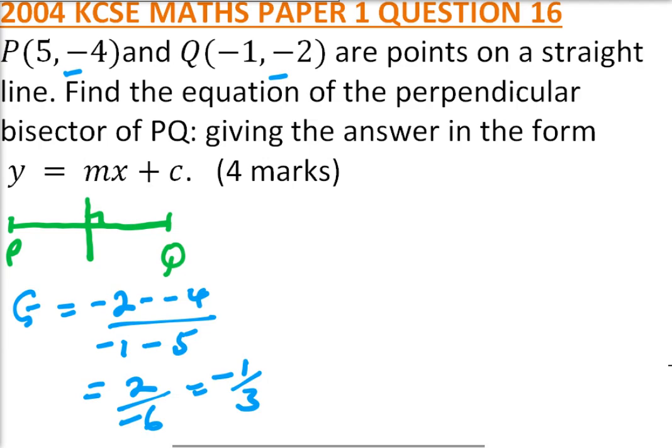If the gradient of PQ is -1/3, what it means is that the gradient of the perpendicular bisector is equal to 3, so that when you multiply 3 by -1/3 you get -1.